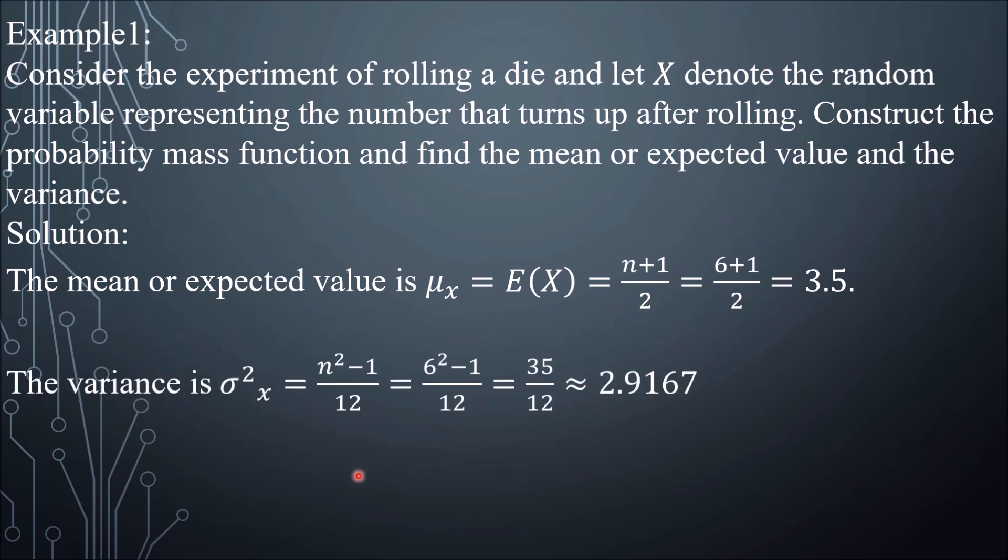The variance, following the formula (n² - 1)/12, equals 2.9167. To get the standard deviation, take the square root of 2.9167.